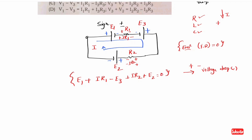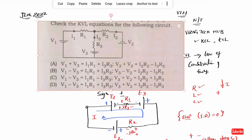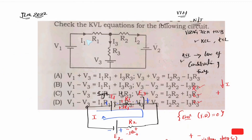Now applying the same KVL to the second loop. We are doing the same KVL; the result will not be opposite. You will answer the same KVL. In this KVL, let's take the same approach with V1, I1, I3.